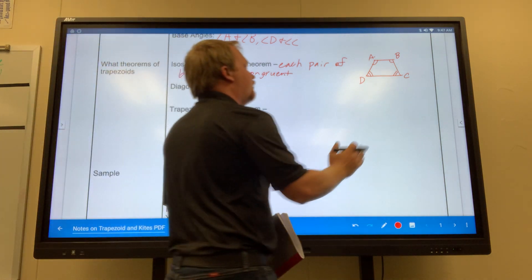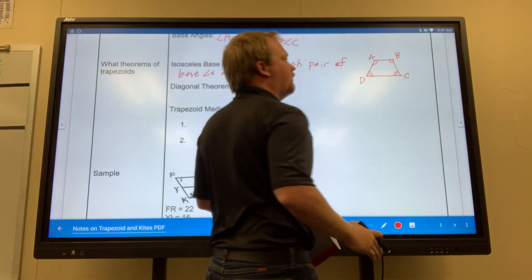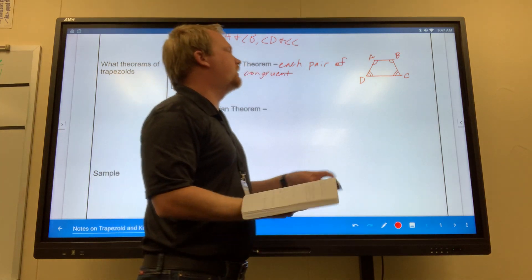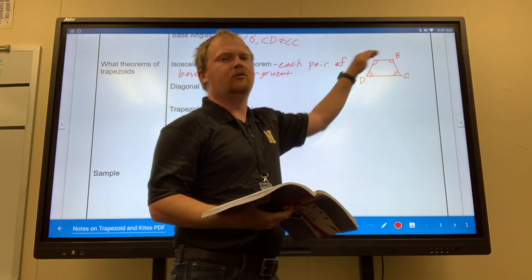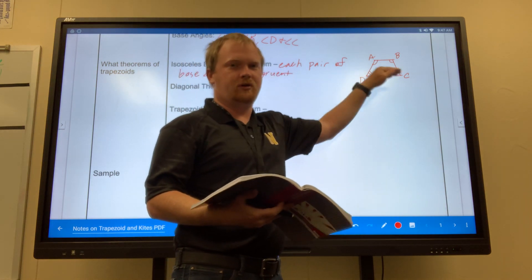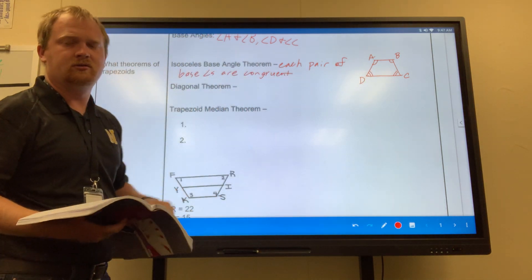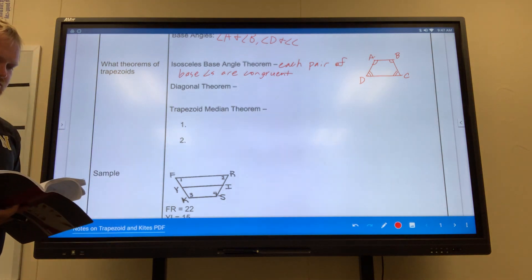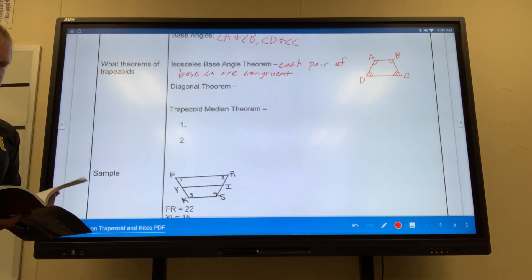So really, if I look at the top, both angles are going to be congruent to each other. If I look at the bottom, both of those are going to be congruent to each other.